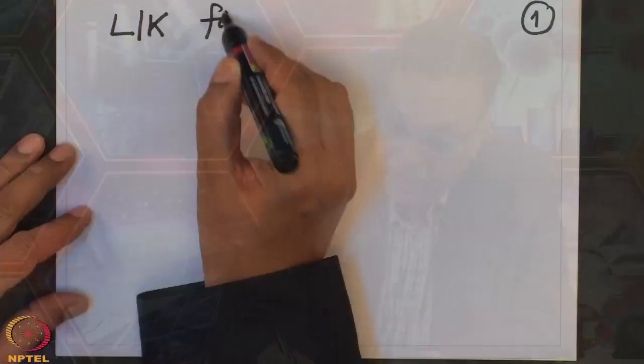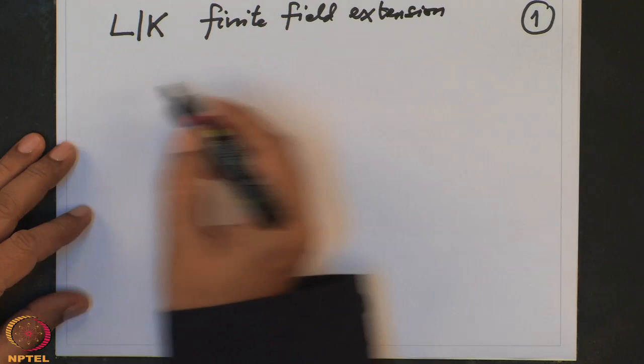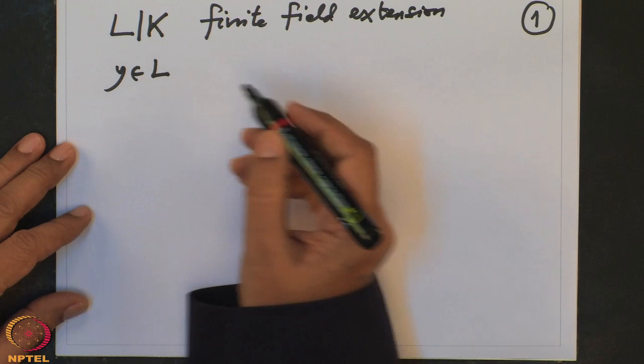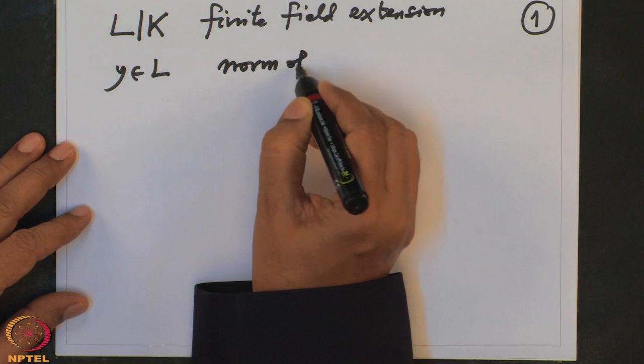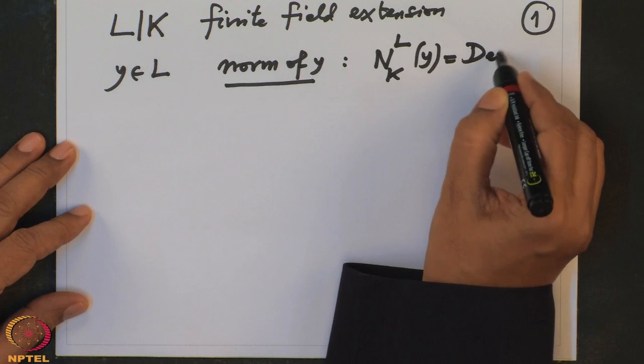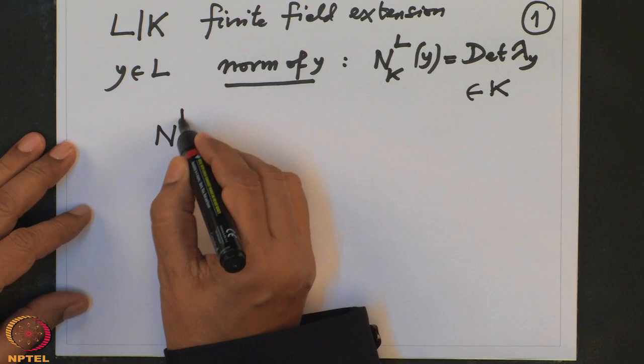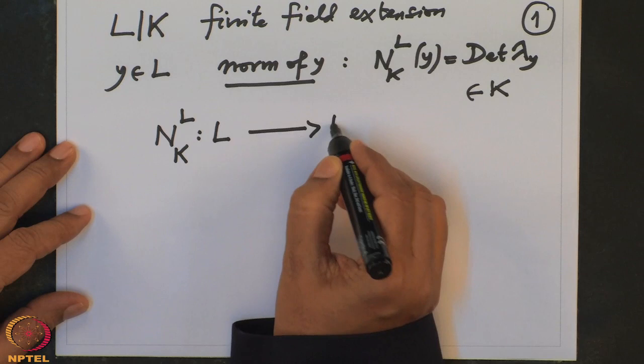In the last lecture we defined norm and trace of an element of a field extension. We started with a finite field extension L over K, and for an element Y in L, we defined the norm of Y, denoted N_{L/K}(Y), as the determinant of the K-linear map lambda_Y. This is an element of K, so the norm is a map from L to K.